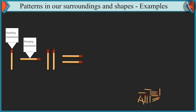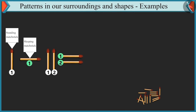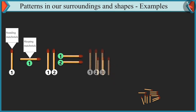Look at this pattern a little more carefully. First, there is one standing matchstick and then one sleeping matchstick. Next, there are two standing matchsticks and two sleeping matchsticks. It means the number of matchsticks is increasing by one each time. First one-one matchstick and then two-two matchsticks. So how many matchsticks do you have to put next? Three-three matchsticks after two-two matchsticks — three standing matchsticks and three sleeping matchsticks. Well done.